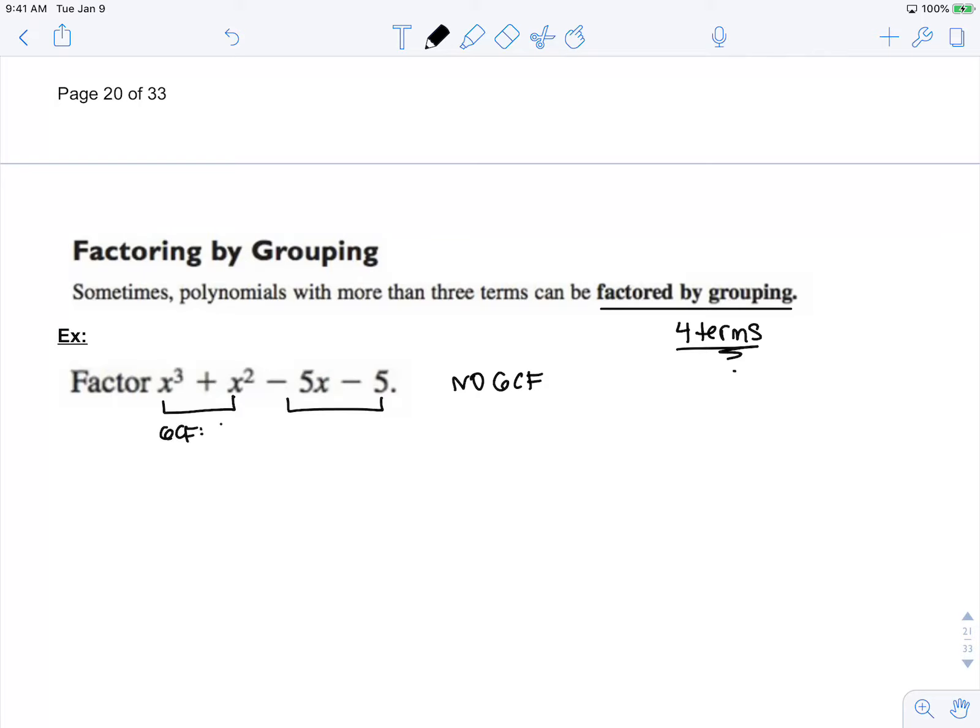The GCF of this group is x squared. The GCF of this group is negative 5. If I factor out x squared from my first group, I'm left with x plus 1.